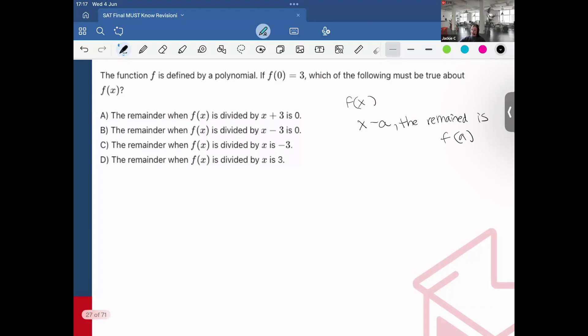So for example, if I have like x minus 2, then the remainder is going to be f(2). If I just have x, that's just going to be 0.